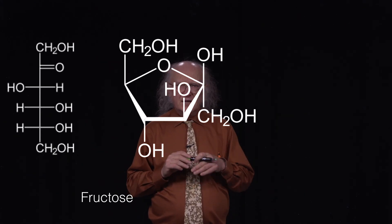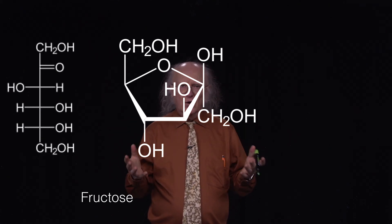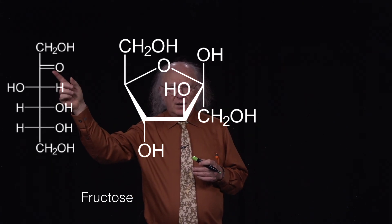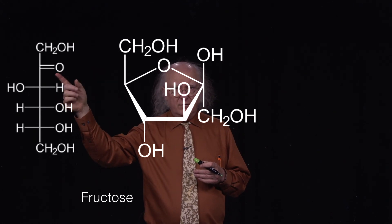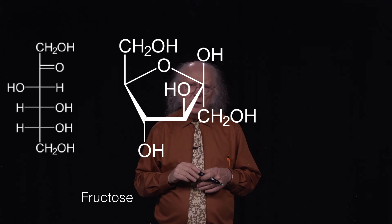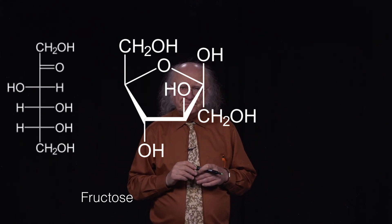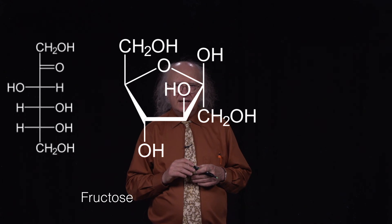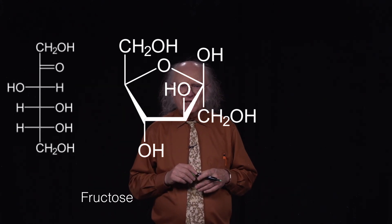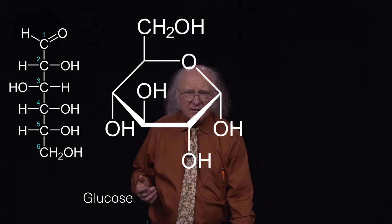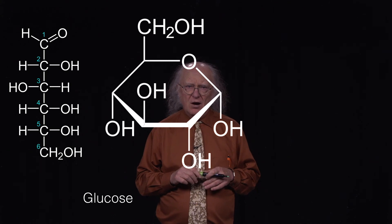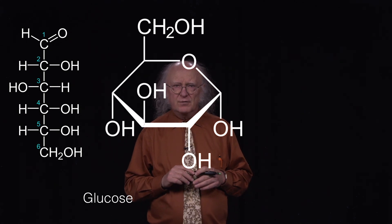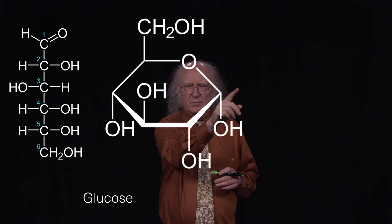Whenever we create a ring structure, the ring always forms as a result of the double-bonded oxygen carbon — that carbon will always be involved in formation of the ring. In the case of fructose, it's carbon number two; for glucose, it's carbon number one. That new asymmetric carbon that's created has a name: we call it the anomeric carbon. Since it's asymmetric, it can have two different configurations. In the circular form of glucose, carbon number one is the new asymmetric carbon — the anomeric carbon.